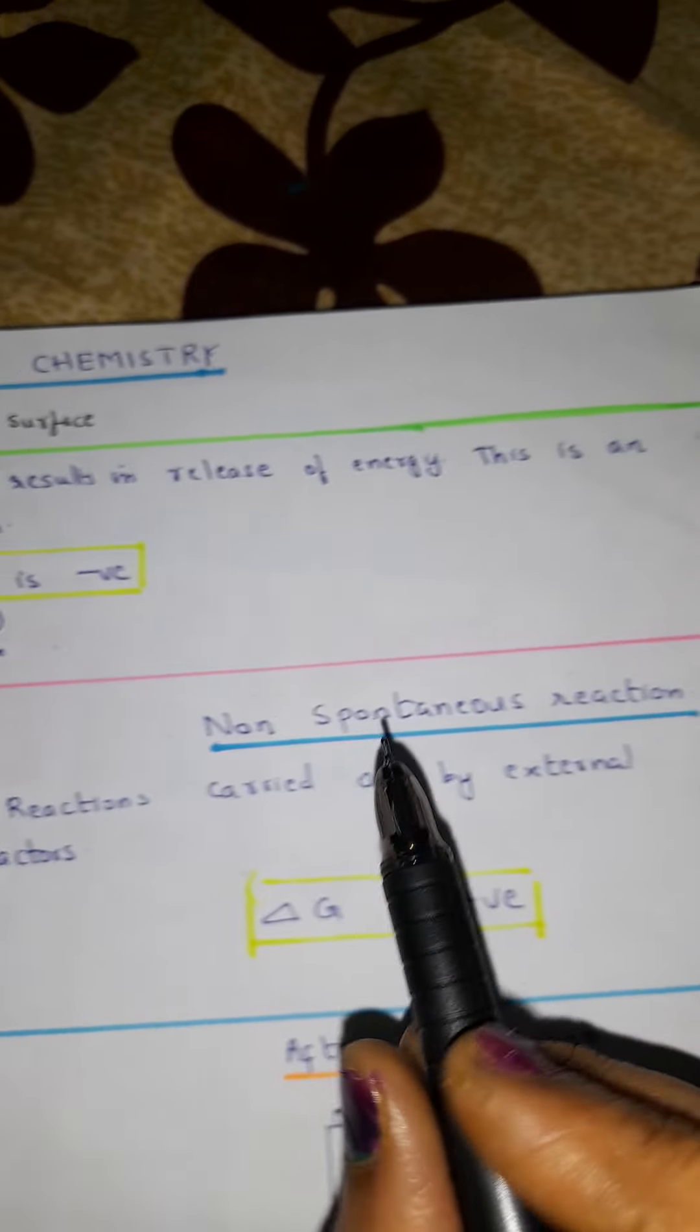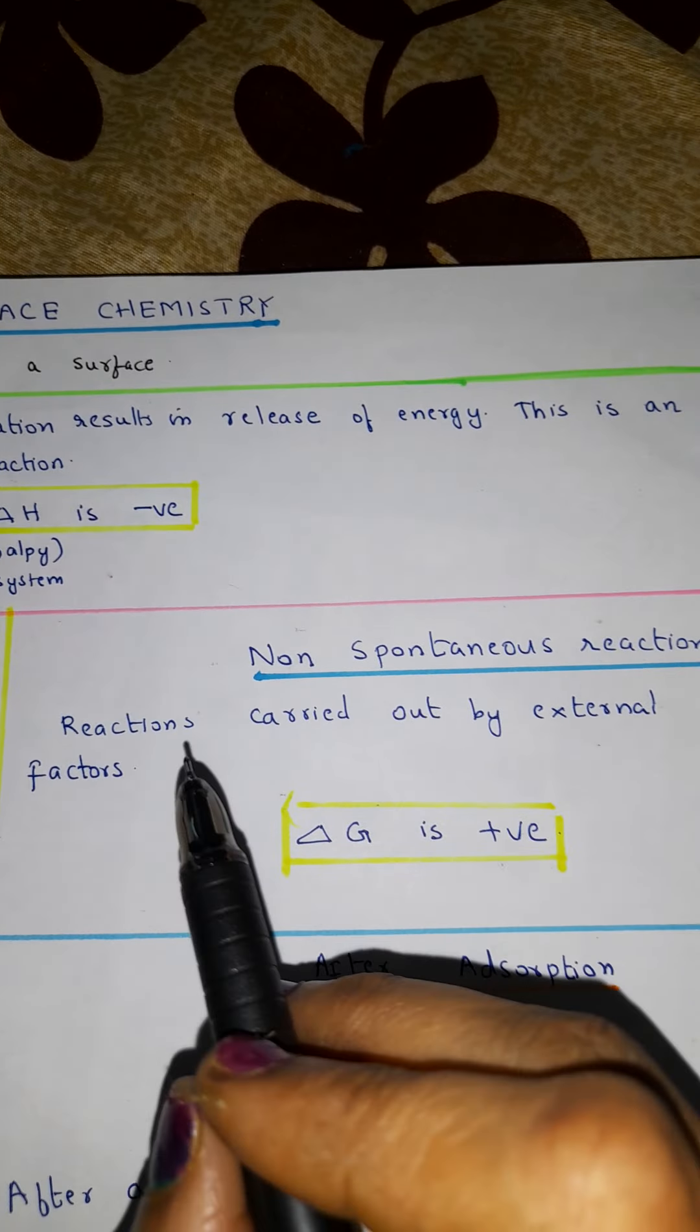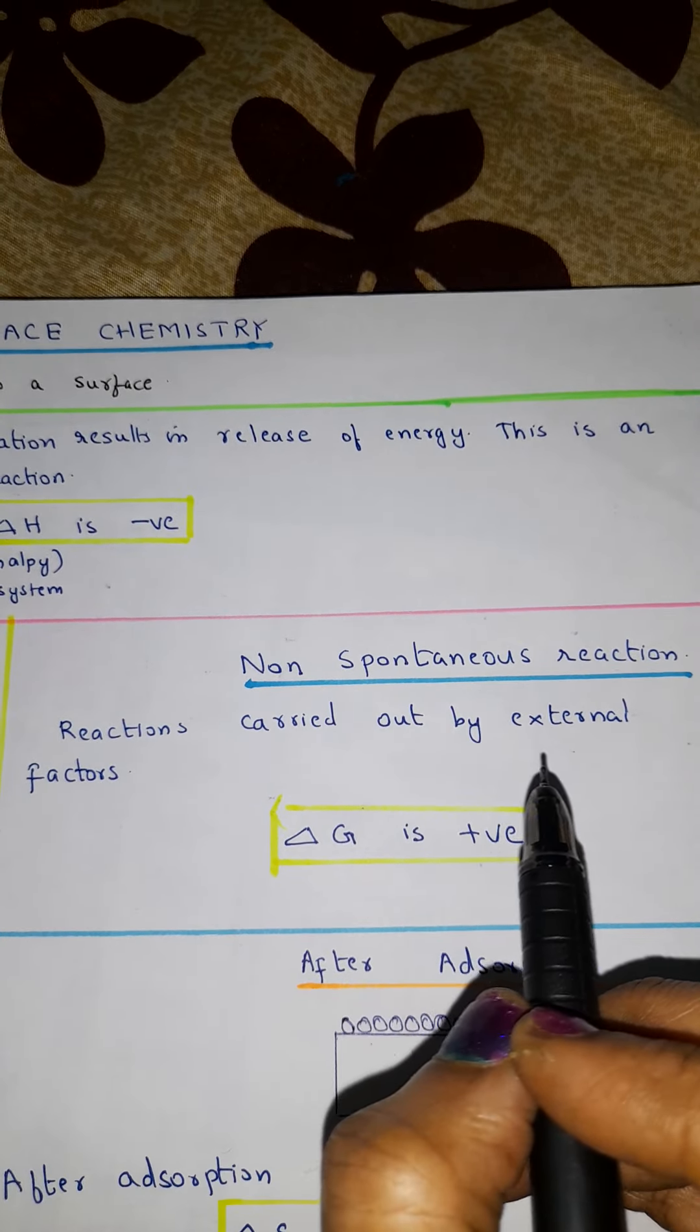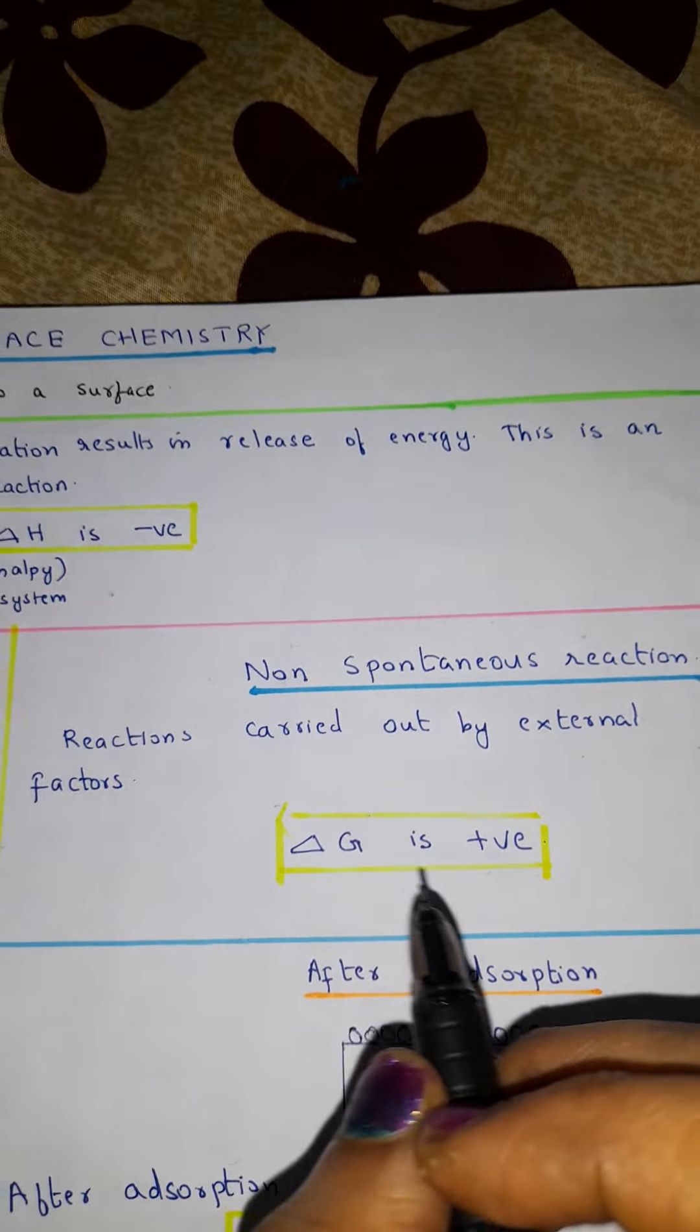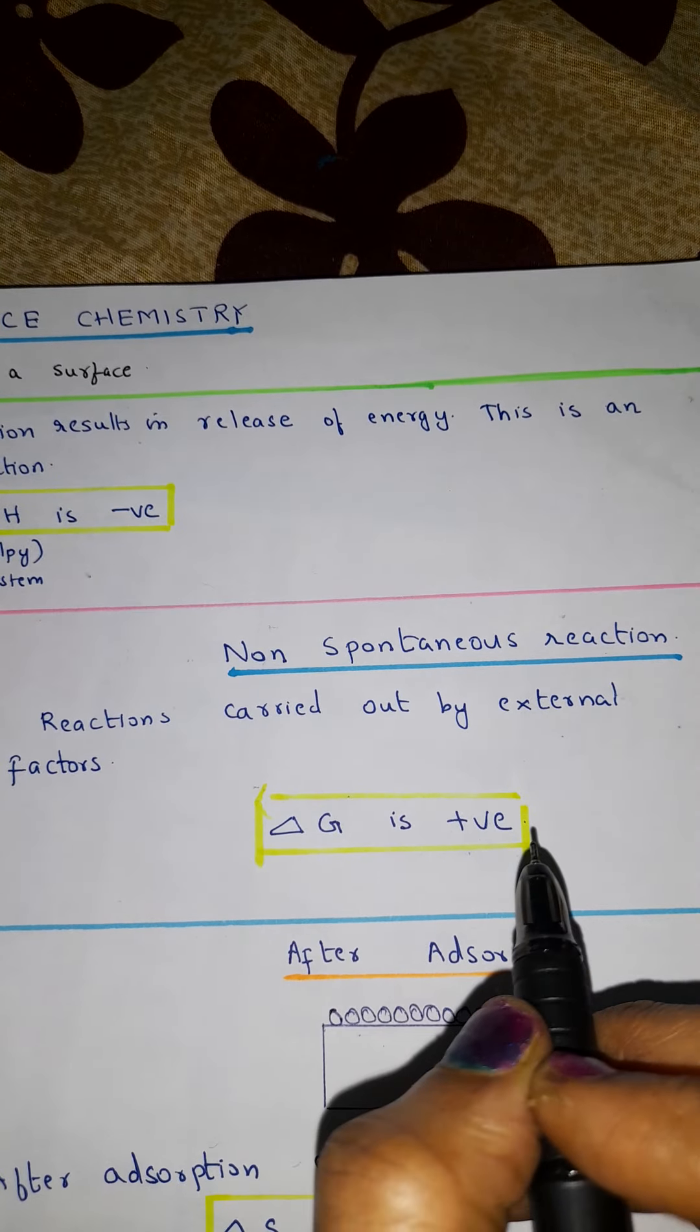Now for non-spontaneous reactions, like reactions carried out by external factors, in those cases delta G will be positive.